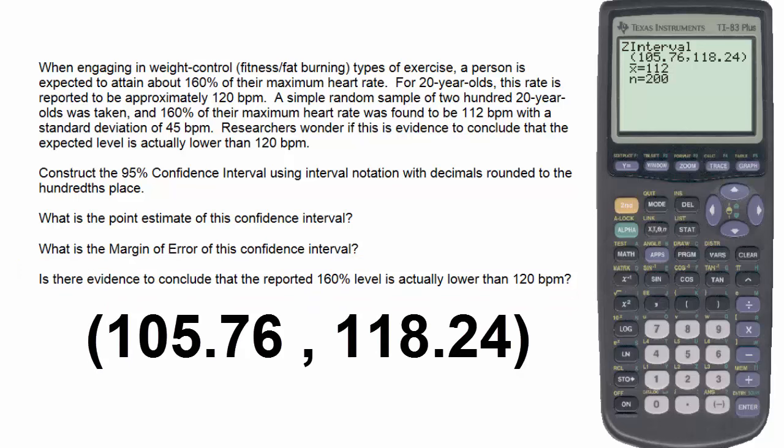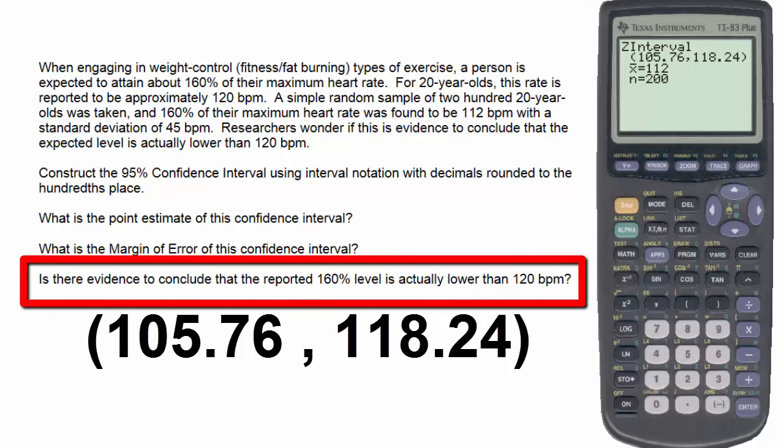our interval does not include 120. The interval estimate of the average is lower than 120, therefore there would be evidence to conclude that the reported 160% level is actually lower than 120 beats per minute.